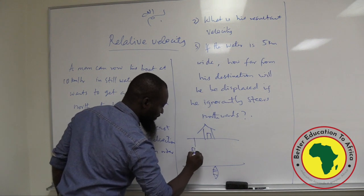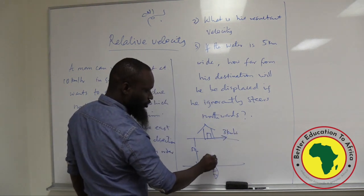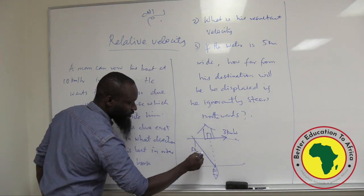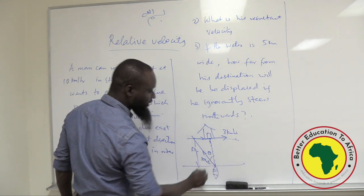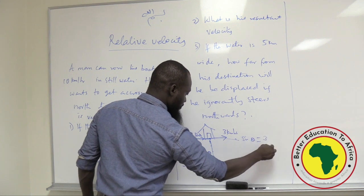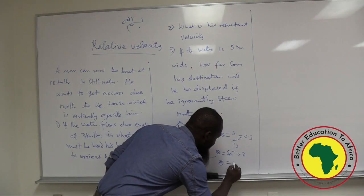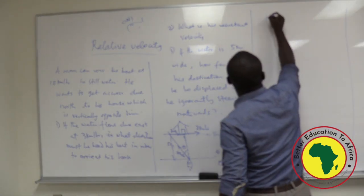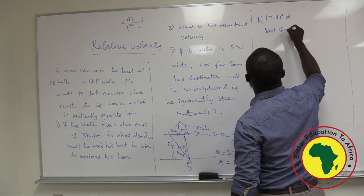The house is directly north, and this river is flowing due east at 3 kilometers per hour. He would be stupid to go straight because the current will displace him. He should head somewhere to the west with his 10 km/h so that the water's current drops him in front of his house. What is that angle theta he should head? Sine theta equals 3 over 10, which is 0.3. So theta equals sine-inverse of 0.3, giving theta equals 17.45 degrees — he must head 17.45 degrees west of north.